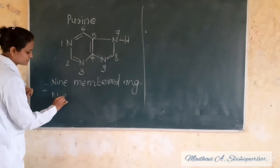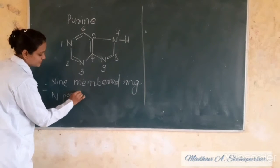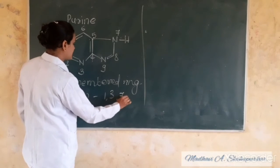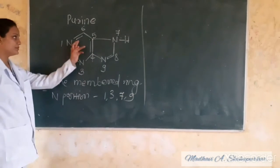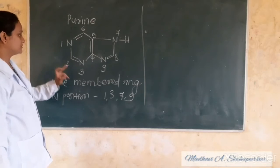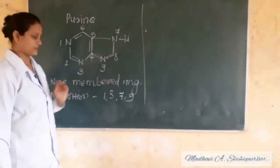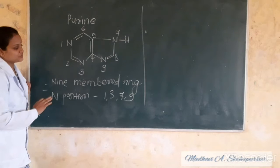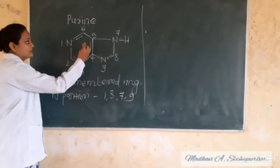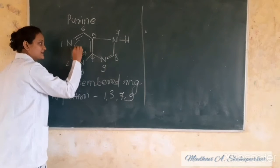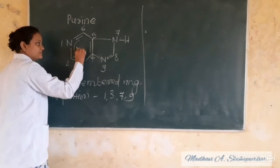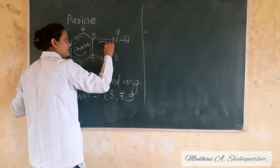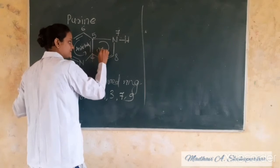Now we will start from here. Nitrogen atoms are at positions 1, 3, 7, and 9. We will start from here: 1, 3, 7, and 9. This is a 9-membered ring — Purine is a 9-membered ring.